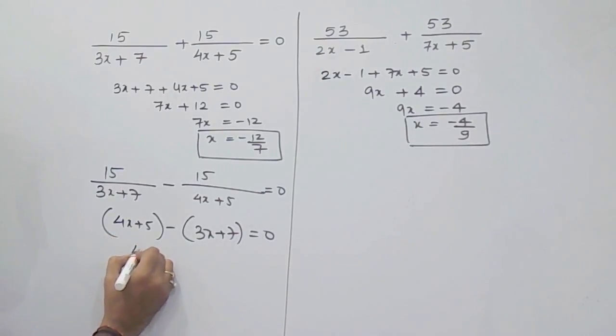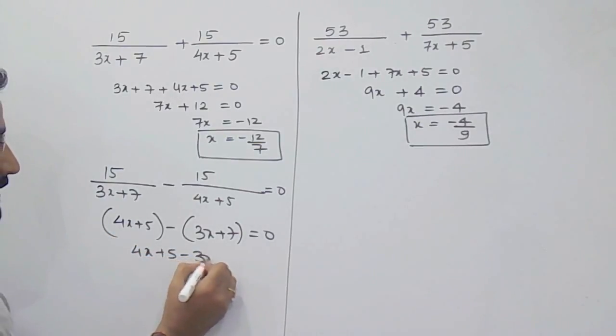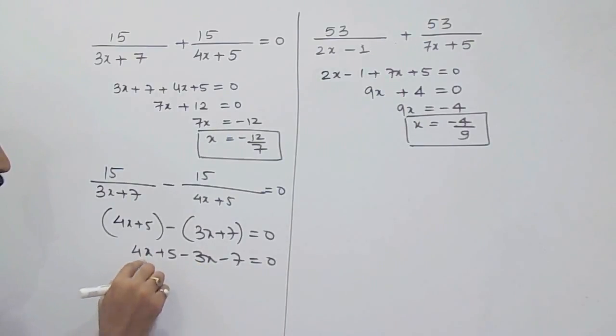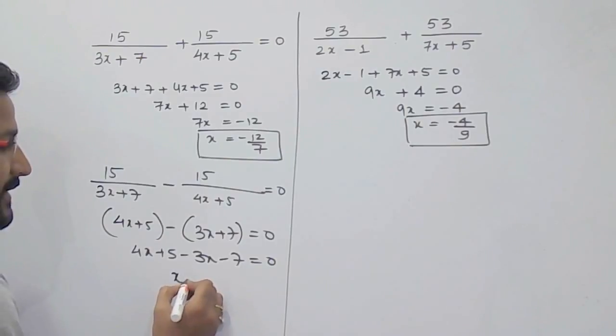Then 4x minus 3x, that is 1x, and 5 minus 7, that is minus 2, equals 0. So your answer will be x equals 2.